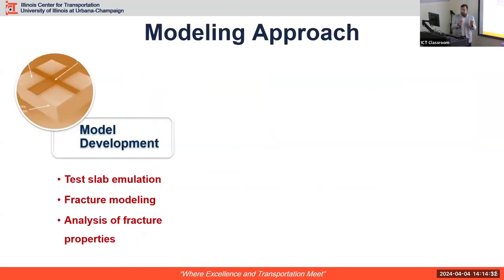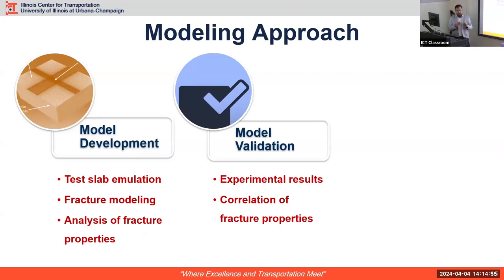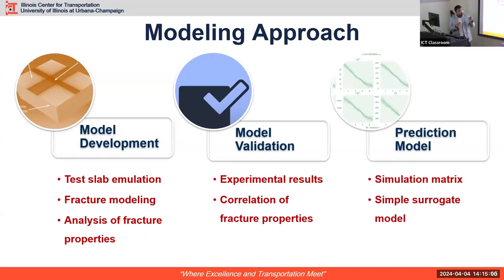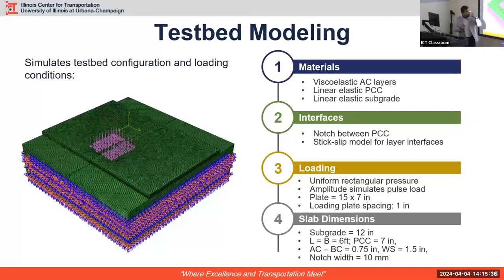The mechanistic part was developed in three stages. First, simulate what is happening on the test exactly in the model. Second, since we're talking about reflective cracking propagation, include fracture modeling and analyze fracture properties. Third, validate by identifying the right properties to match experimental results. The model runs in Abaqus — much faster than experiments, about three hours per run — but agencies still can't run Abaqus routinely, so the goal is to develop a surrogate model using a simulation matrix with extreme scenarios of thickness, material properties, and bonding conditions.